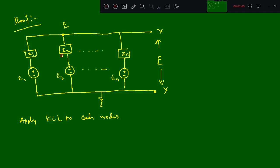By applying each node, if we apply at first this point I am going to get E minus E1 divided by Z1. Then next continue E minus E2 divided by Z2. Then next continue E minus E3 divided by Z1.